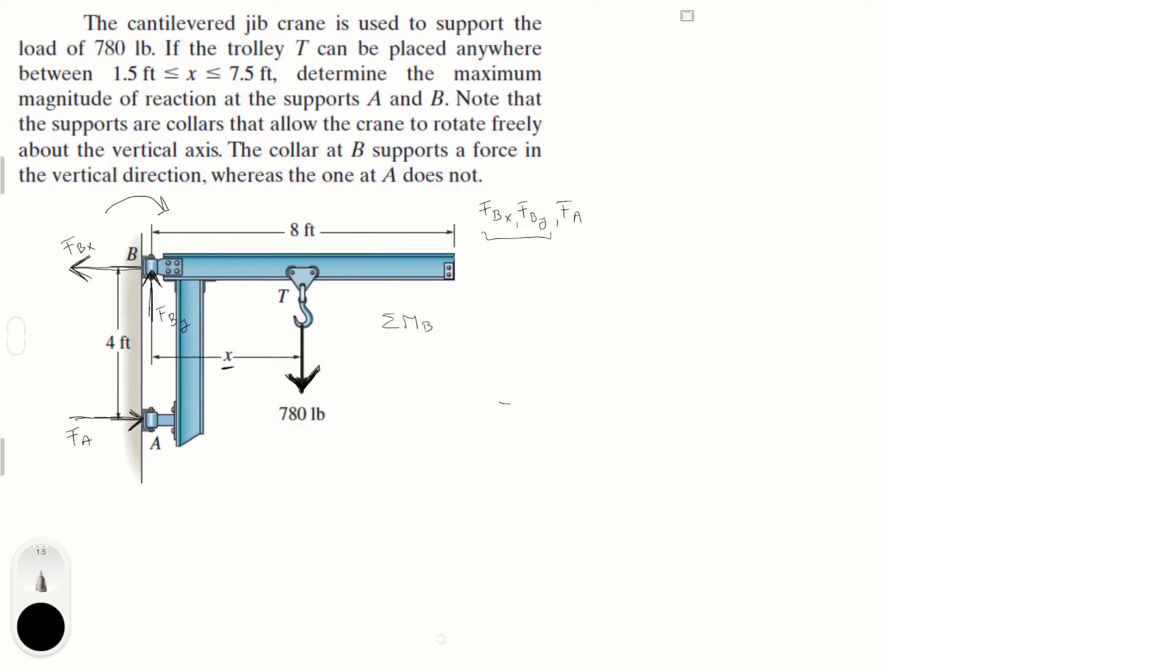Sum of the moments at B is equal to zero. I'm going to assume counterclockwise is positive. And this is interesting. Look, I'm going to call this 780 the weight. So we have the weight going down.